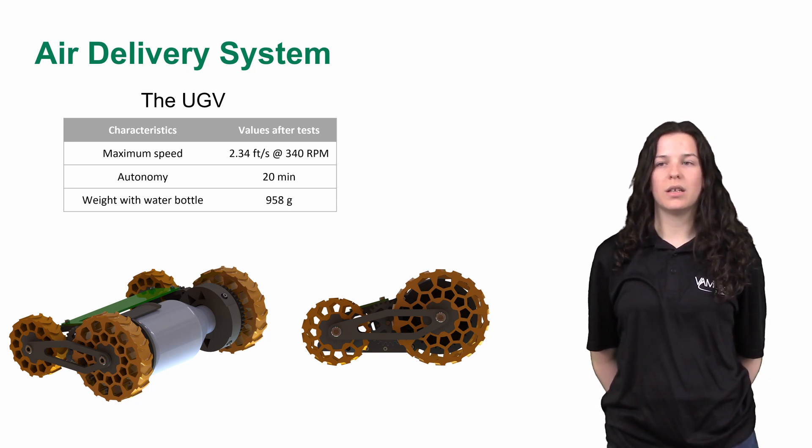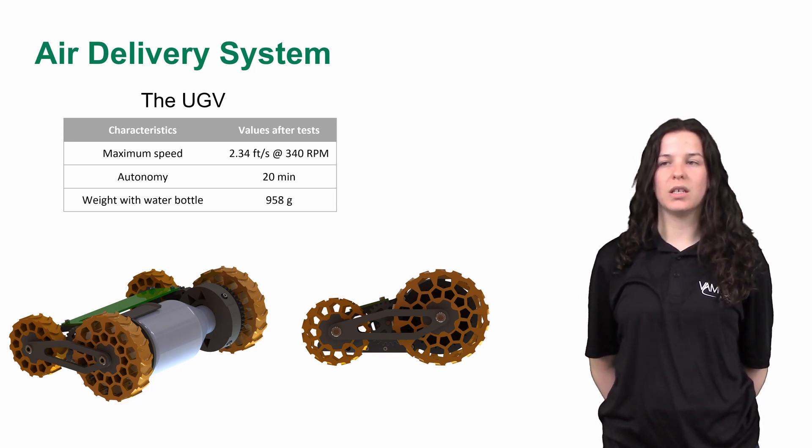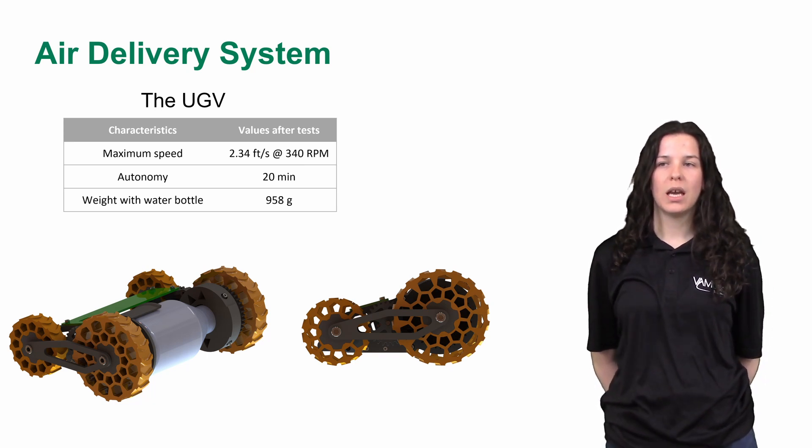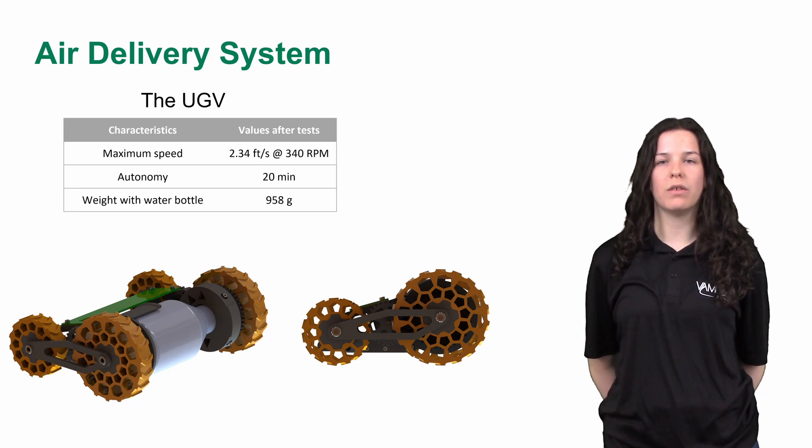With all the tests the team has done, the UGV is capable of reaching a top speed of 2.34 feet per second. It has an autonomy of 20 minutes. It has a total weight of 958 grams.